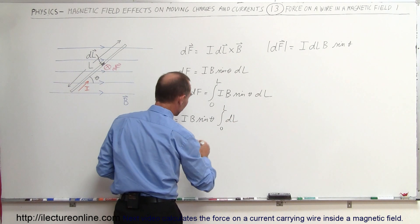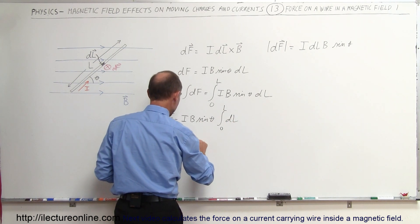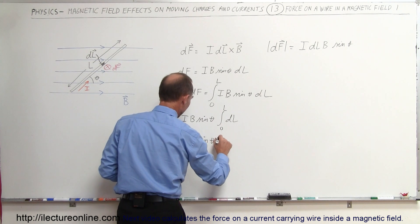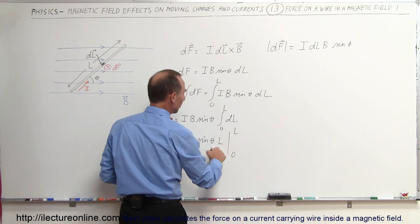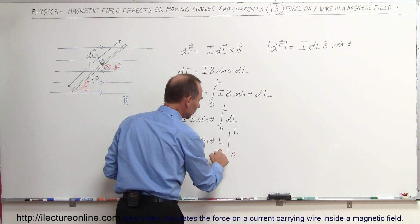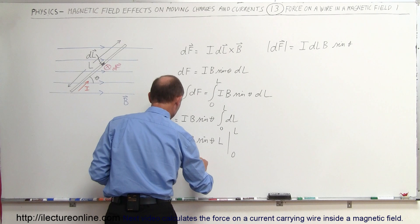So the integral of dl is simply L, so the force equals I B sine of theta times L integrated from zero to L. We plug in the upper limit we get L, plug in the lower limit we get zero, and so the force equals I B L times sine of theta.